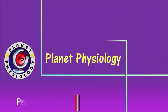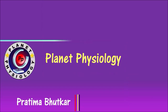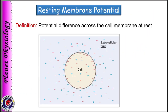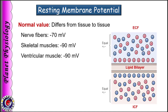Hi, this is Pratima and you are watching Planet Kizology. Today we shall discuss about resting membrane potential. Resting membrane potential is defined as potential difference across the membrane at rest. As you know, cell membrane is a polarized structure with negativity inside. This degree of negativity varies from cell to cell. For example, in nerve fibers it is –70mV while in skeletal muscles and ventricular muscles it is –90mV.